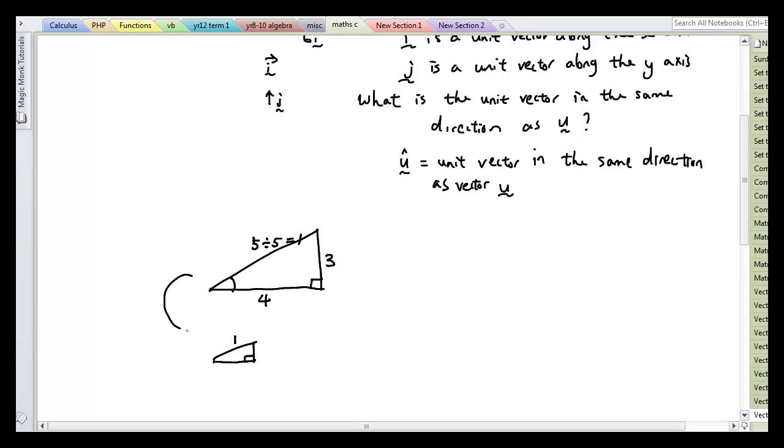Now to make these two triangles similar, I have to divide the other two sides by the same scale factor. So I have to divide 3 by 5 as well, and I have to divide 4 by 5 as well. So the answer here is going to be 0.6, and the answer here is 0.8. So these two triangles are similar. Now, therefore, similarly,